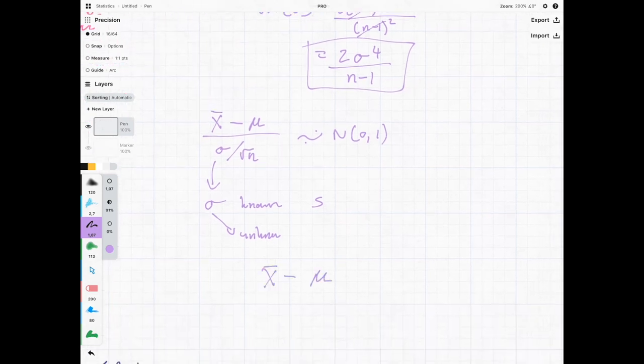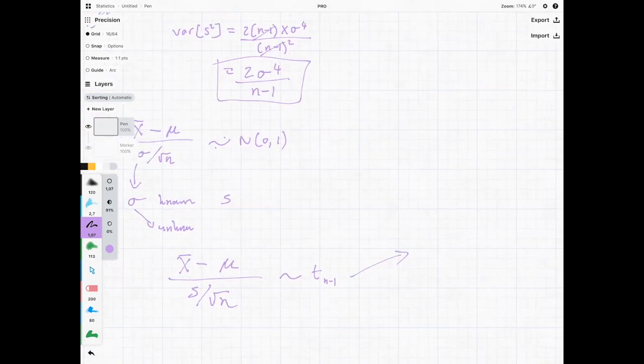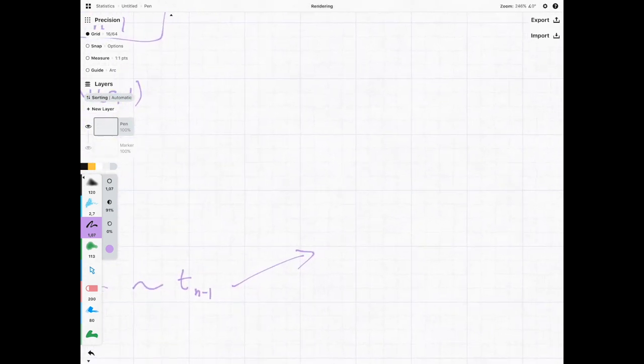We can use the sample variance when this little guy over here is unknown and what we're going to see is x bar minus mu over s over square root n we can get this t distribution.